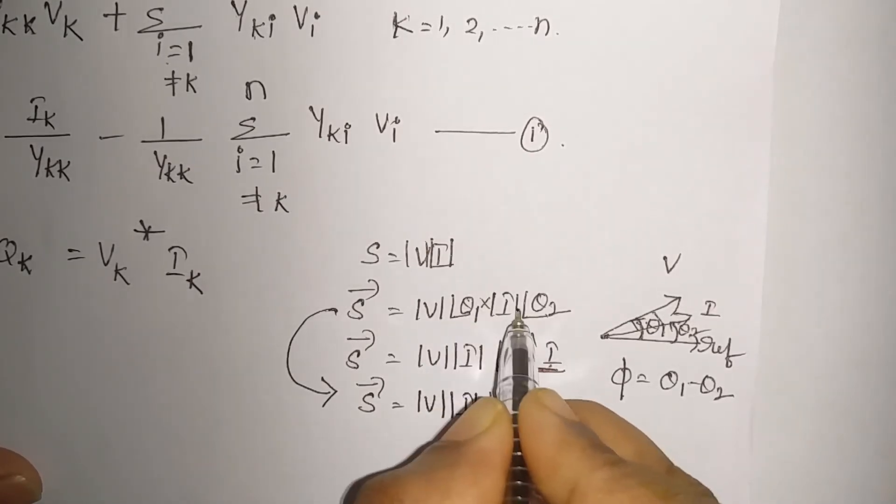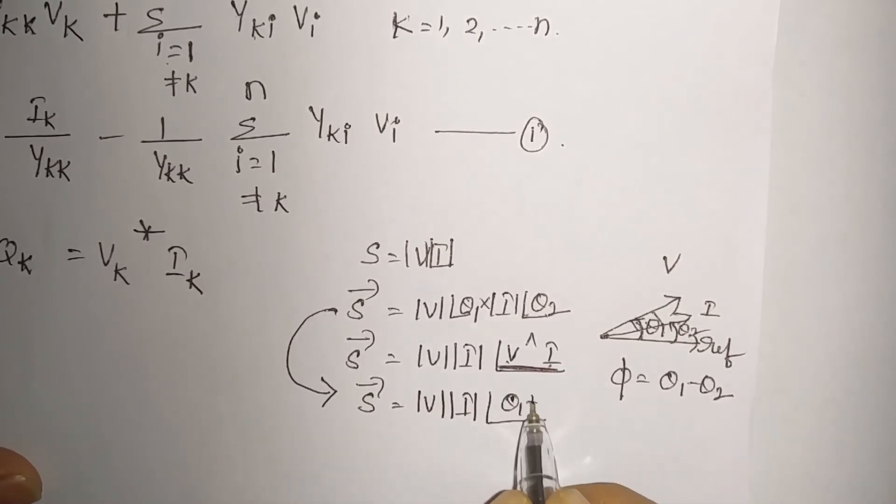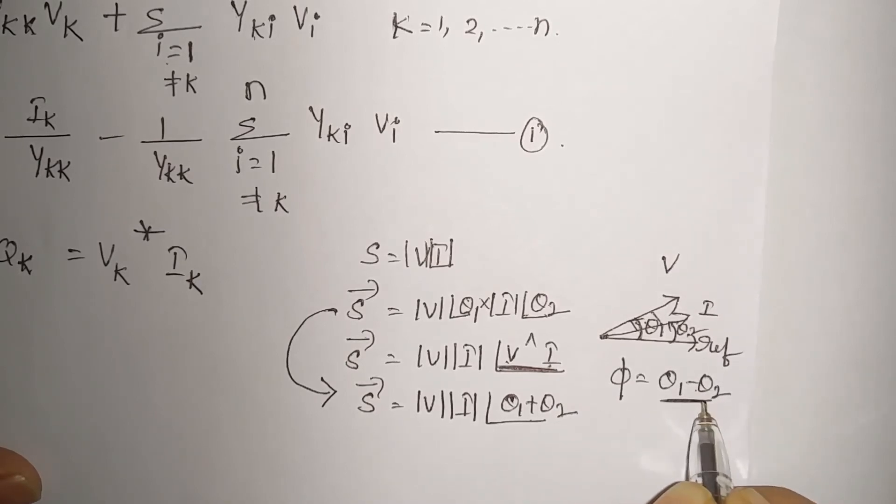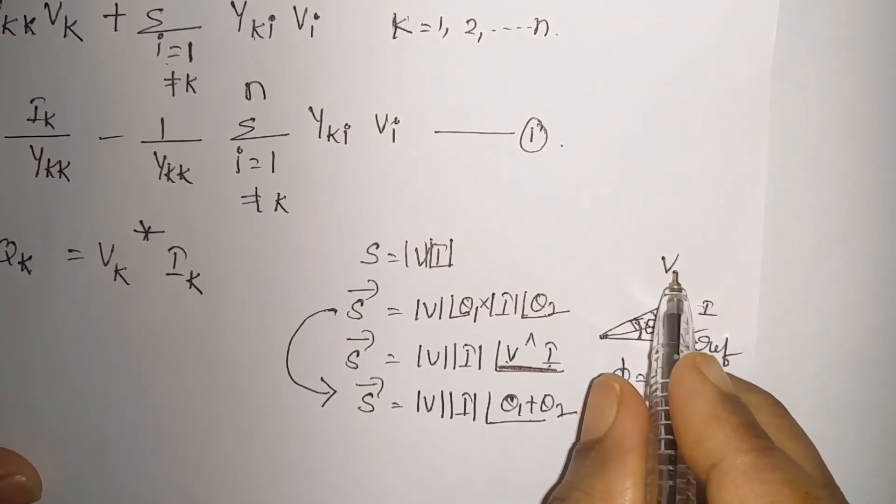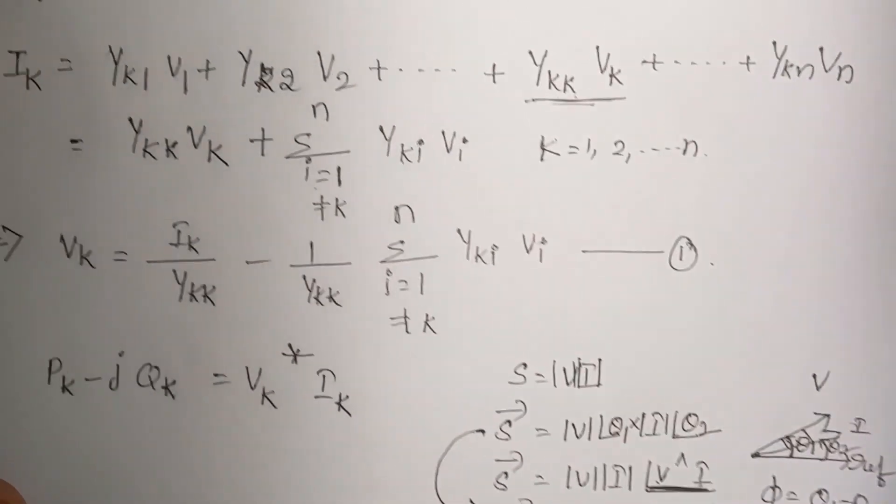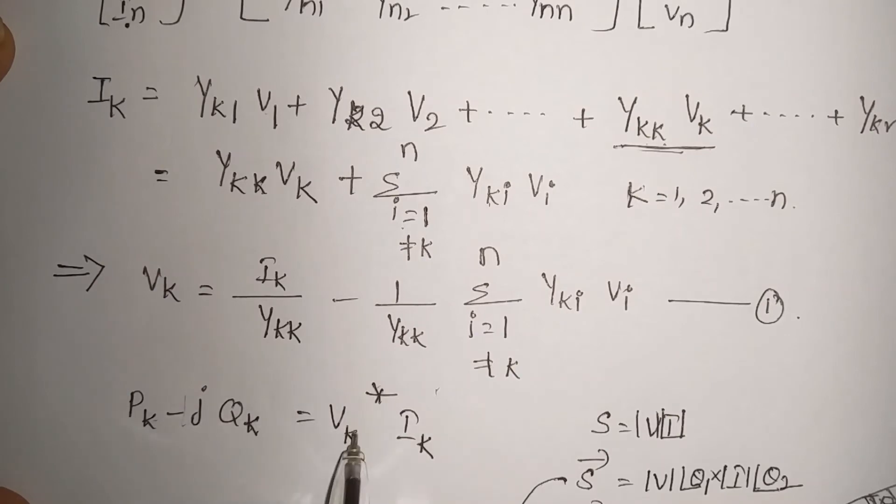So you take this relation. S is equal to mod V into mod I according to our mathematics. If we are multiplying two polar quantities, angle should be added, so you are getting theta 1 plus theta 2. Is that correct? No. So there should be some difference. We need to take the conjugate either for V or I. So if it is P plus jQk, it will be Vk into Ik conjugate. If we take Pk minus jQk, it will be Vk conjugate into Ik.